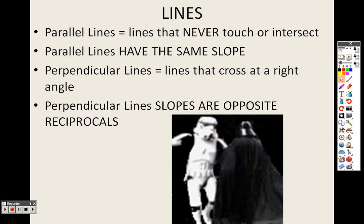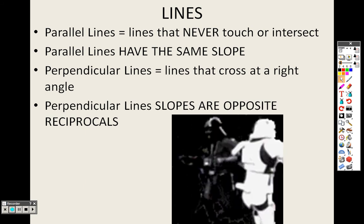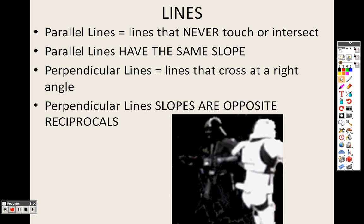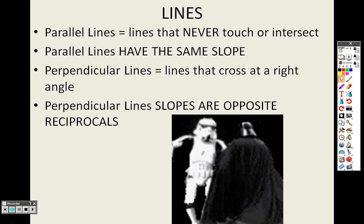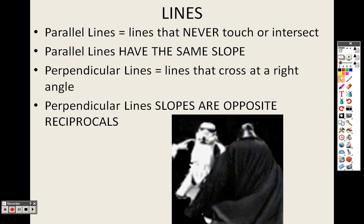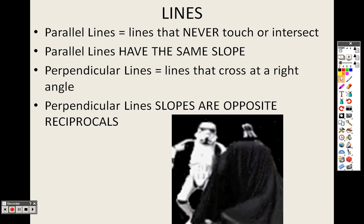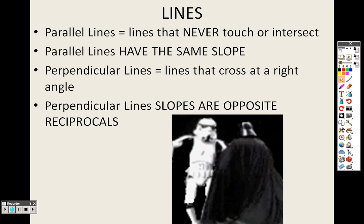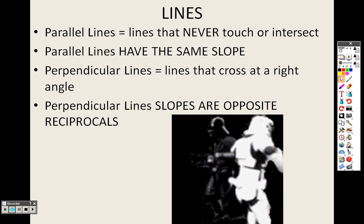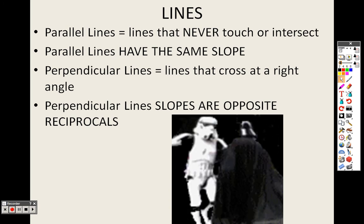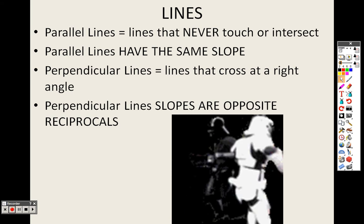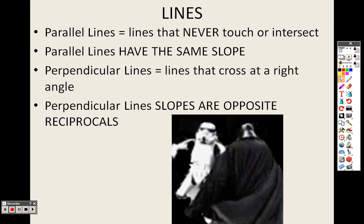For example, with slopes: if I gave you 1/2, you would flip it to get 2/1, then make it negative to get -2. If I gave you 3/5, you'd flip it to get 5/3, then make it negative: -5/3. If I gave you 8, you'd flip it to get 1/8, then make it negative: -1/8.